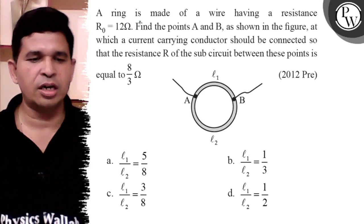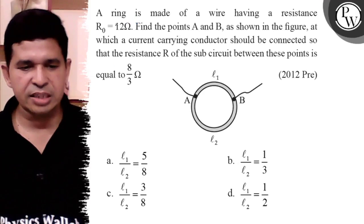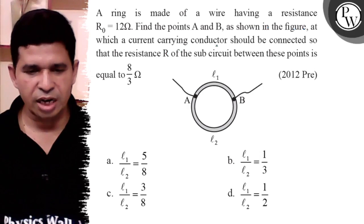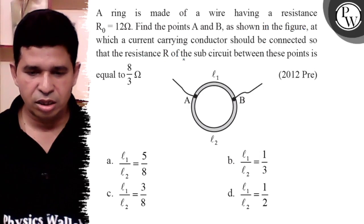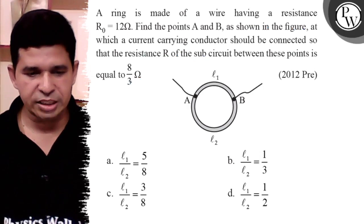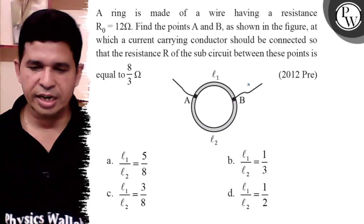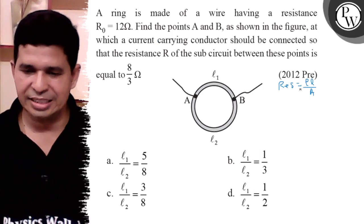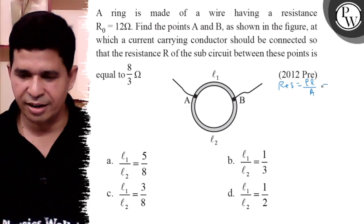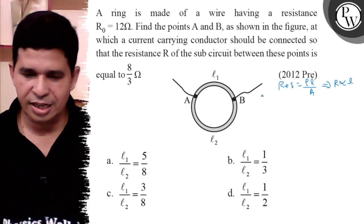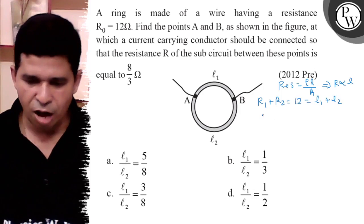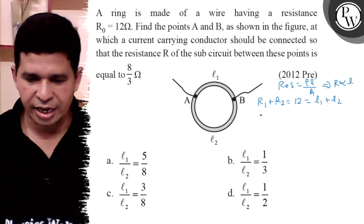Hello, let us see this question. A ring is made of wire having a resistance R0 of 12 Ohm. Find points A and B at which a current carrying conductor would be connected so that resistance of the circuit between these points is 8 by 3. We know that total ring resistance is rho L by A, so it is directly proportional to L. Therefore R1 plus R2 equals 12, which means L1 plus L2 equals 12.